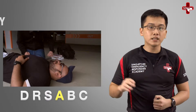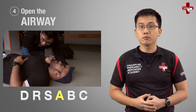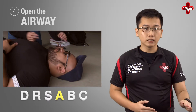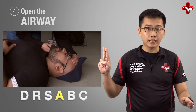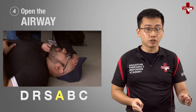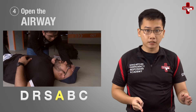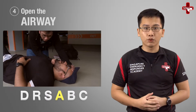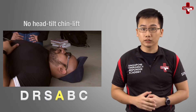Step 4: Open the airway. Perform the head-tilt chin-lift maneuver. Place your palm on the forehead and push it backwards gently, while using your middle finger and index finger of your other hand to lift the bony part of the chin upwards. When you make those movements at the same time, the airway is opened, avoiding cases where the tongue might have fallen back and blocked the airway.